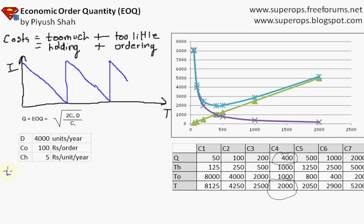So my EOQ that I have is equal to square root, I go as per this formula, two times cost of ordering which is 100 times 4000.